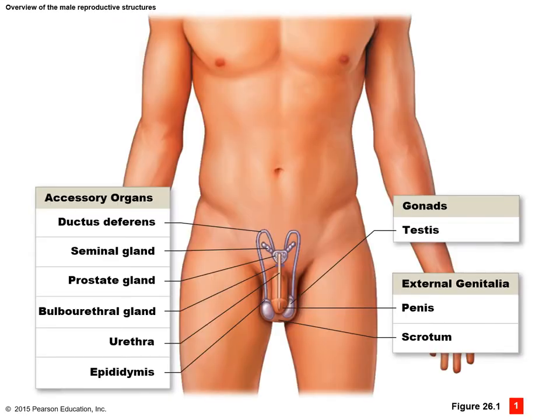Here we can see a simple diagram of the male reproductive system. Note the testes and the epididymis coming directly off the testes, as the ductus deferens extends up from the epididymis. The ductus deferens wraps up, back, and around, extending behind the urinary bladder, and then inserts into the prostate gland. Once into the prostate gland, it merges with the urethra to exit the body. We have the seminal glands attached to the posterior aspect of the prostate gland, and the bulbourethral gland just in front of that. All three glands secrete different components of what would become semen.